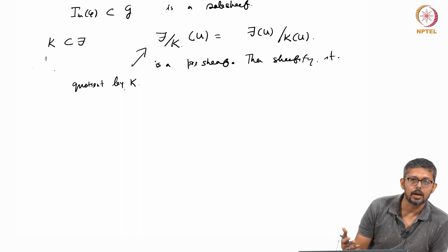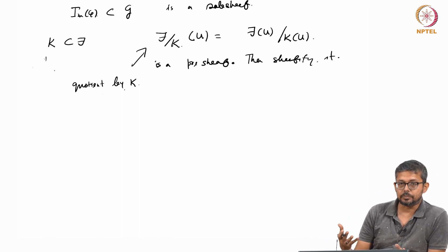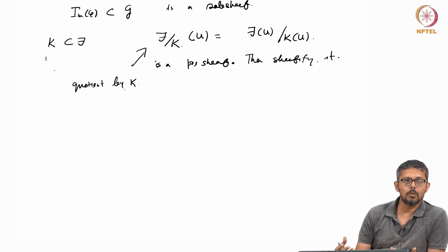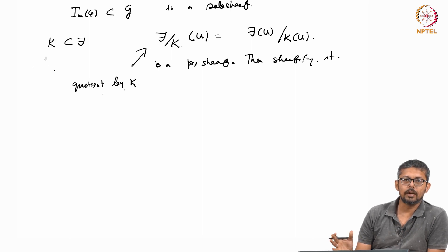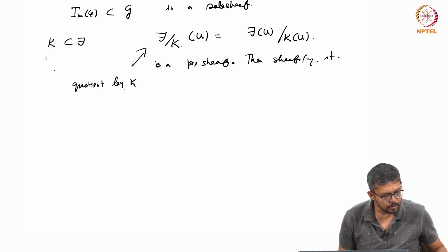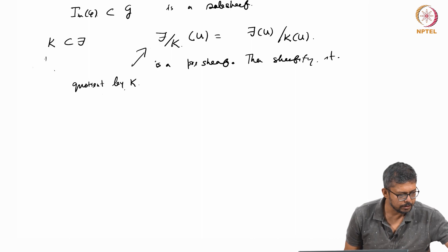You need an abelian category to define cohomology and more properties like resolutions — projective resolution and injective resolution. So you can talk about cohomology theory. Abelian category is very important to do further homological algebra and study sheaves. These are all words I am not going to explain exactly, but just mentioning for now.